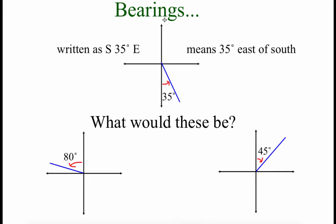Here's what I mean. We've got this fixed north and south line running down the middle of our picture and we're focusing on this blue line — that's like the path we're on. We're looking at the angle made between our path and the nearest vertical piece, which would be this south portion down here. So we would call this S35°E because this angle is 35 degrees east of being straight south.